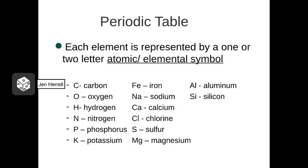Each different type of element is represented by an atomic symbol, which consists of either one or two letters. These are the atomic symbols I would like you to know for this class, taken from elements 1 through 20. These are the most important ones, so you do want to memorize these before test time if you don't have them memorized already.